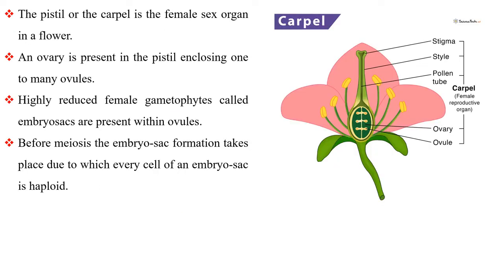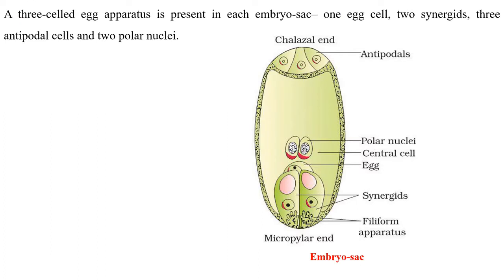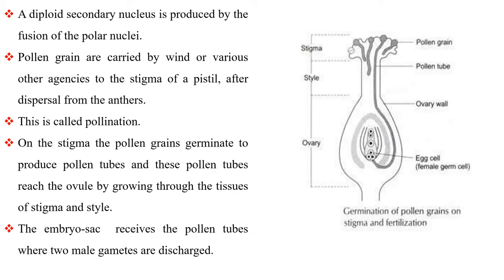The pistil or the carpel is the female sex organ in a flower. An ovary is present in the pistil, enclosing one to many ovules. Highly reduced female gametophytes called embryo sacs are present within ovules. The embryo sac formation takes place before meiosis, due to which every cell of an embryo sac is haploid. The three-celled egg apparatus is present in each embryo sac: one egg cell, two synergids, three antipodal cells and two polar nuclei. A diploid secondary nucleus is produced by the fusion of the polar nuclei.